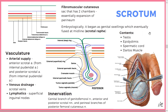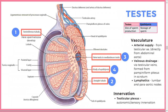It's important to know that the testes and scrotum have different lymphatic drainage — if there's cancer, they will metastasize to different locations. The innervation is mostly sensory from perineal branches and posterior femoral cutaneous nerve, with some autonomic supply.